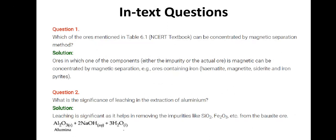First question is: which of the ores mentioned in table 6.1 of the NCERT book can be concentrated by magnetic separation method? Ores in which one of the components, either the impurity or the actual ore, is magnetic can be concentrated by magnetic separation. The ores we can consider are ores containing iron: hematite, magnetite, siderite, and iron pyrites.